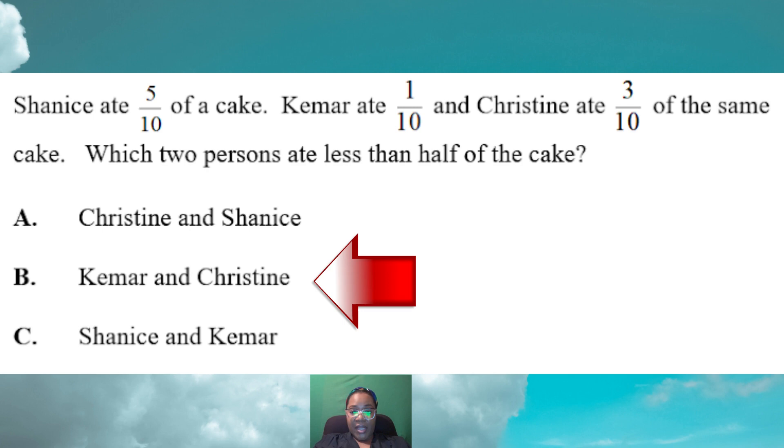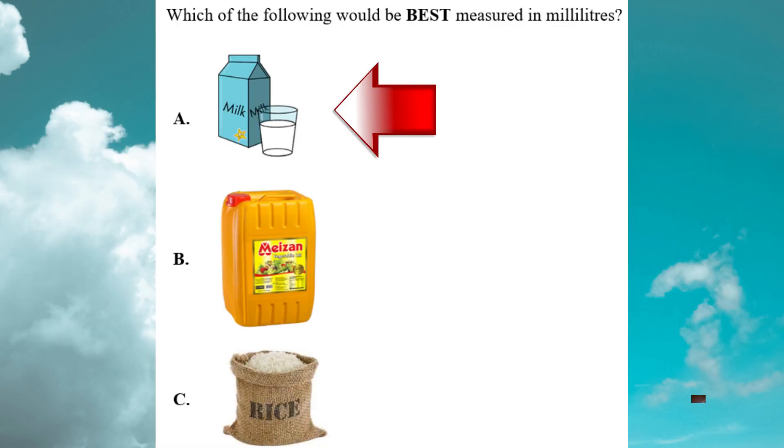Okay, for this math question, one child ate five tenths of the cake, and we know that five tenths is the equivalent fraction for a half. And then one ate one tenth, and the other child ate three tenths. So the question is asking, which children ate less than a half? So we know that the answer would be Kemar and Christine, because one tenth is less than a half, and three tenths is less than a half.